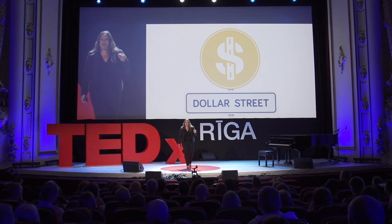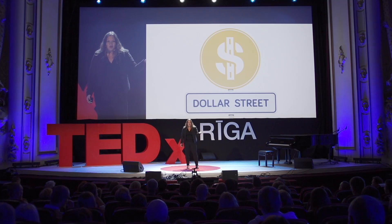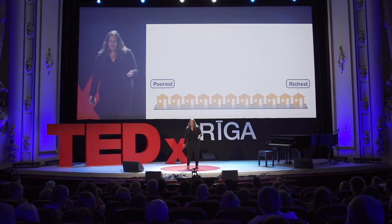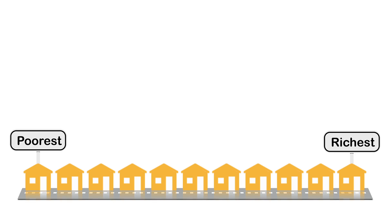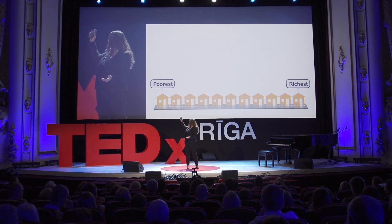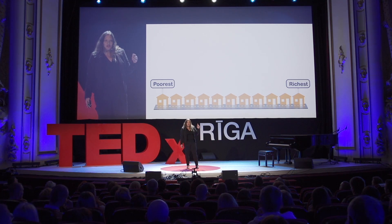Dollar Street — first of all I need to explain what that is. It's a very easy concept. It's a visual framework to understand the world based on data, but in a way that is easier to understand. The idea is to understand how everybody lives, and we sort people by income. So imagine the world as a street. You have the poorest to the far left and the richest to the far right, and everybody else in the world lives somewhere in between.